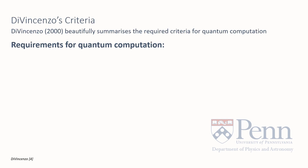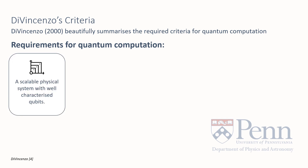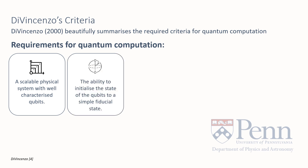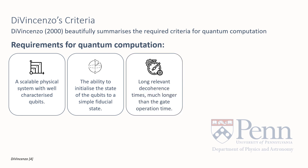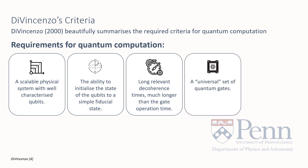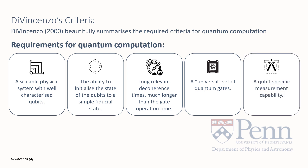Di Vincenzo in 2000 summarized the required criteria for quantum computing as five key points. Firstly, a scalable physical system with well-characterized qubits. Secondly, the ability to initialize the state of the qubits to a simple state. Long and relevant decoherence times, much longer than the gate operation time. A universal set of quantum gates — unitary operations can be performed in finite time. And a qubit-specific measurement capability.